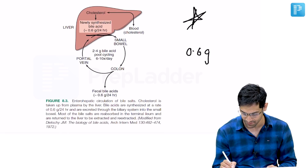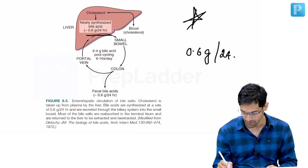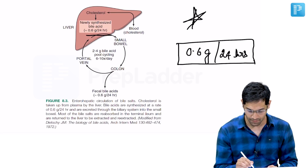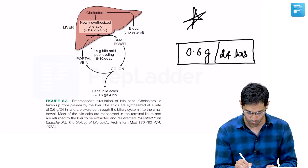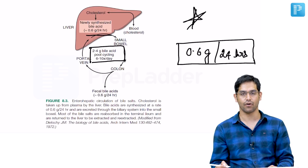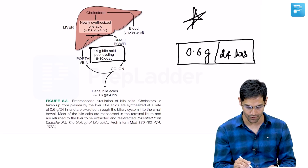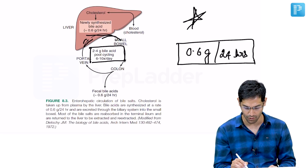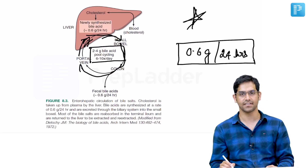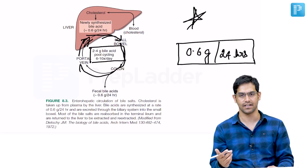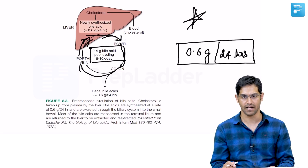Around 0.6 grams per 24 hours is the newly synthesized bile acid. Around 2 to 4 grams of bile acid goes through the pool approximately 6 to 10 times per day — secreted into the small bowel, reabsorbed, returned via portal vein. Around 0.6 grams of bile acid is lost in the feces every day, and around 0.6 grams is newly generated every day.